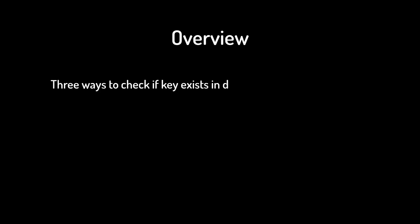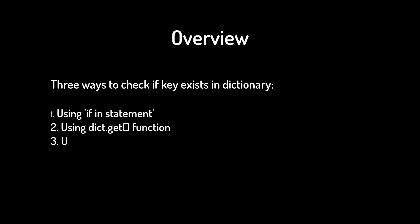Hi guys, in this video we will discuss three different approaches to check if a key exists in a dictionary or not. The first one is using the 'if in' statement, the second is using the get function, and the third one is using iteration. Let's start with it.